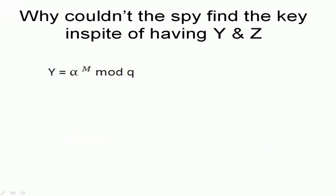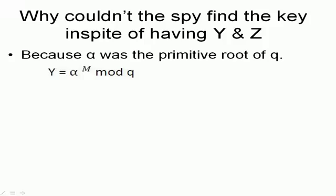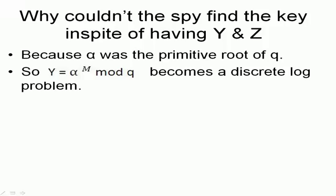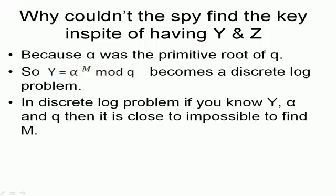Now, why couldn't the spy find the key in spite of having Y and Z? Because alpha was a primitive root of Q. That means Y equals alpha raised to M mod Q becomes a discrete log problem. Now, what is a discrete log problem? In a discrete log problem like the above ones, if you know Y, if you know alpha, and if you know Q, then it is close to impossible to find M.